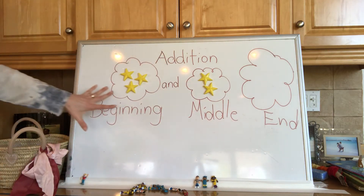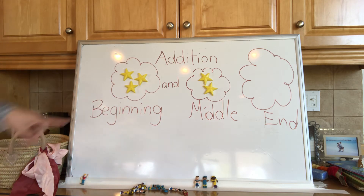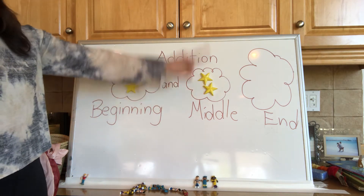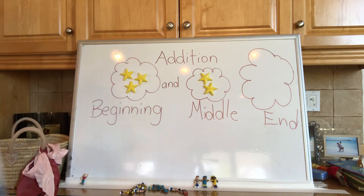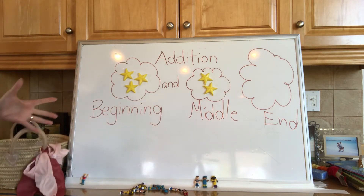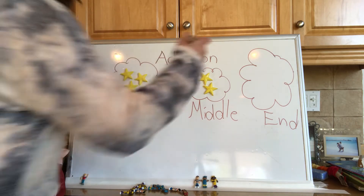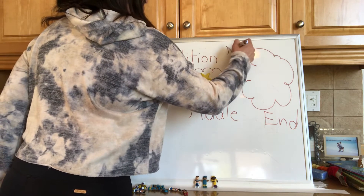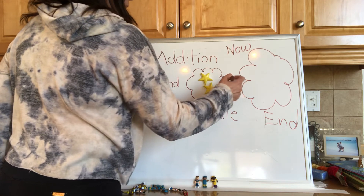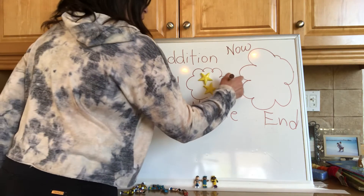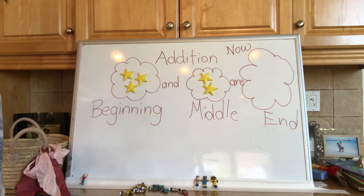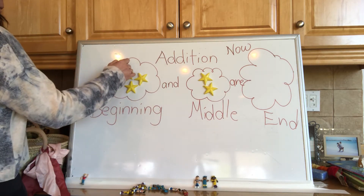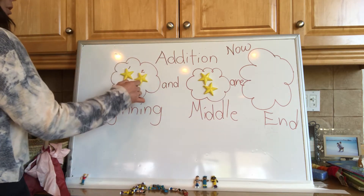Let's start again. At the beginning of my story, I saw three beautiful stars in the sky. And then I looked towards the other side and I saw two more. Now, the end of my story — there are how many stars? Well, if I count here: one, two, three.